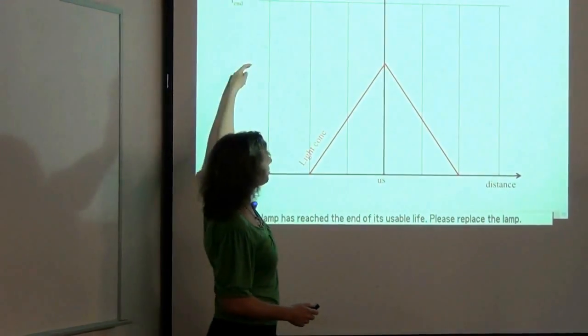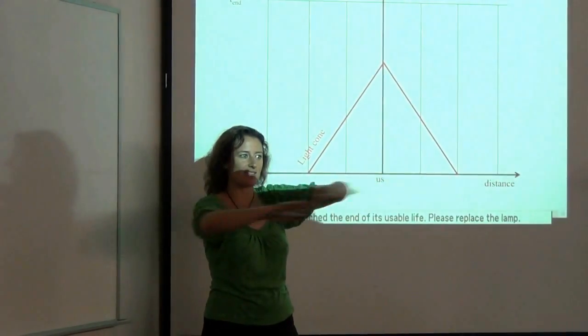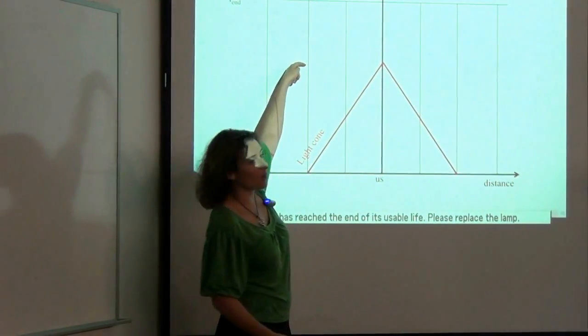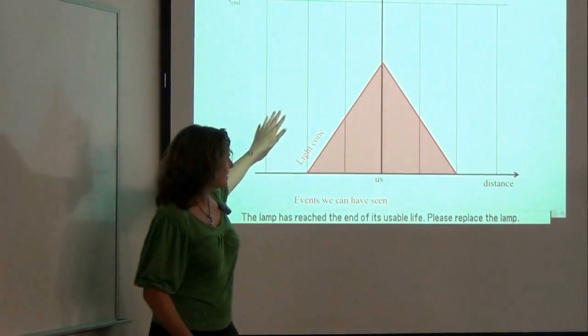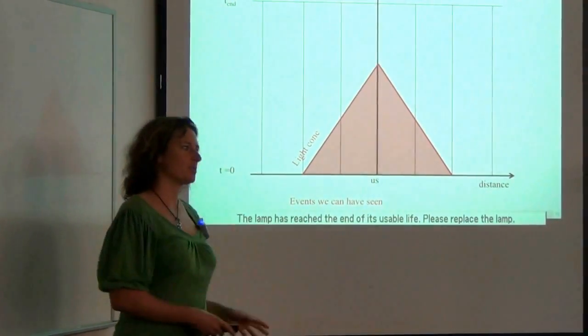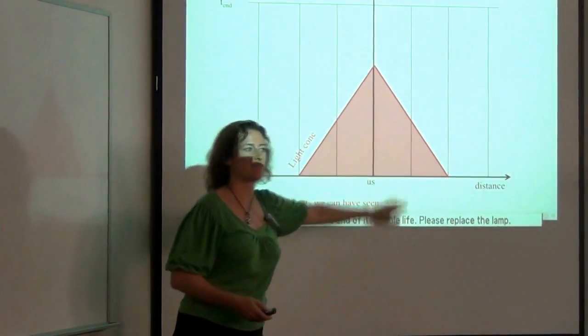Note that it's not, if we drew a horizontal line through, that's the current time everywhere. So that's the dt equals zero. But that's not what we see. This shaded in area are all the events that we can possibly have seen already. So these are the events that we can have seen in the past.